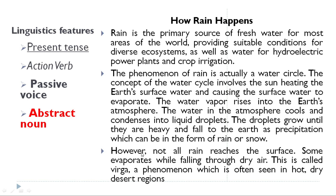The last paragraph states: 'However, not all rain reaches the surface. Some evaporates while falling through dry air. This is called Virga, a phenomenon which is often seen in hot, dry desert regions.' This is the example of an explanation text, which deals with how to explain and why a process is happening.